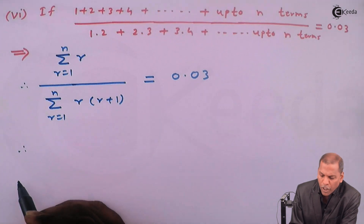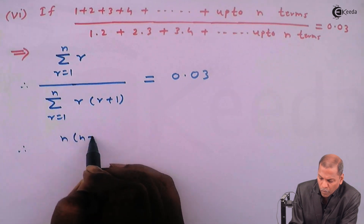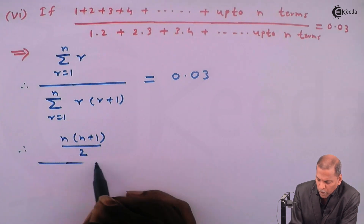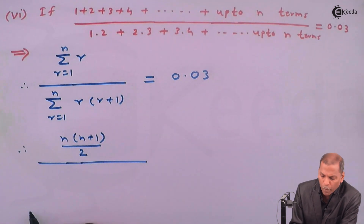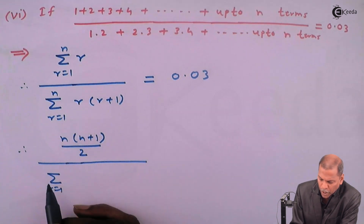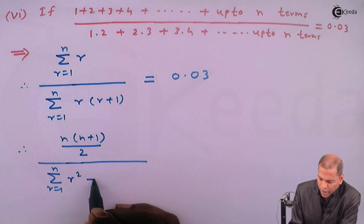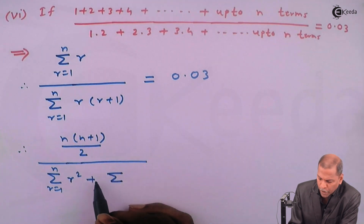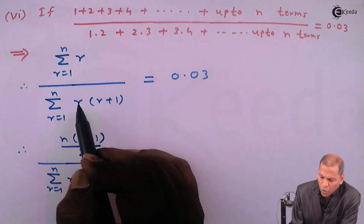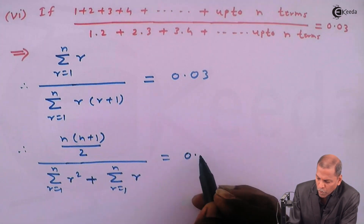By using theorem one, for summation r we write n(n+1)/2 in the numerator. Then totally divided by — in the denominator we have two summations: summation r² (that is r into r), plus another summation of r (that is r into one), where r takes value one to n. And that equals 0.03.